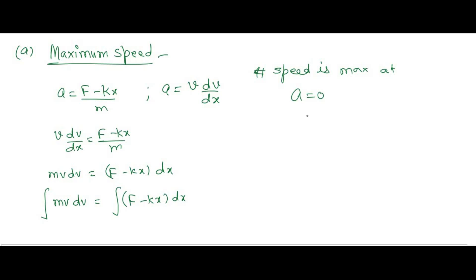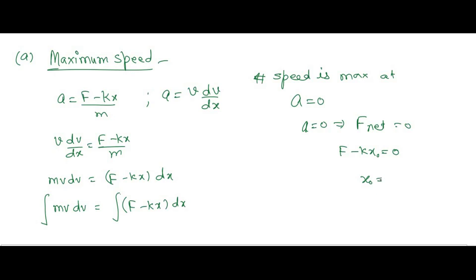When acceleration is zero, the net force is zero: F − k·x₀ = 0, so x₀ = F/k. This is the coordinate where the velocity will be maximum. So our limits are: at x = 0 the initial speed is 0, and at x = F/k the velocity is maximum.